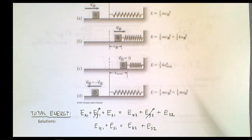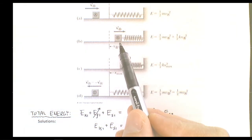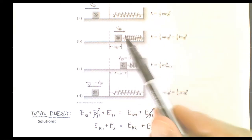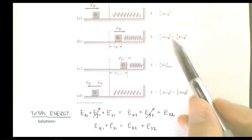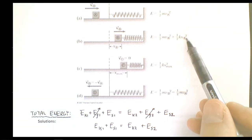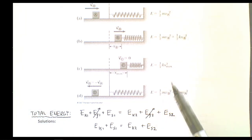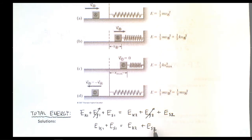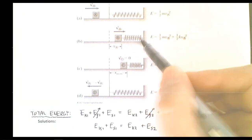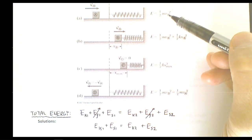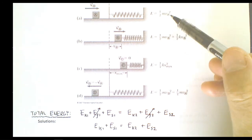As the block starts to compress the spring, some energy gets stored into the spring. The total energy equals one half mv2 squared plus one half k·xb squared. So the kinetic energy is decreasing while the spring energy is increasing, but the two together exactly equal the initial kinetic energy. That total remains constant throughout.